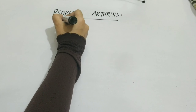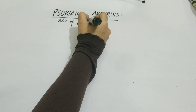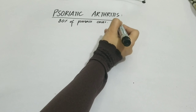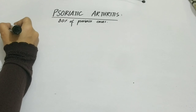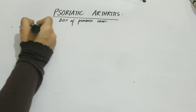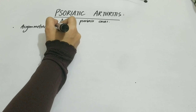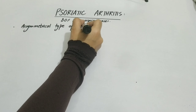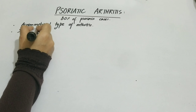In the last video we covered ankylosing spondylitis, which is a type of seronegative arthritis. Here is another type of seronegative arthritis: psoriatic arthritis. Psoriatic arthritis occurs in 80% of psoriasis cases — if someone has psoriasis skin lesion, 80% of the time psoriatic arthritis is associated with it.